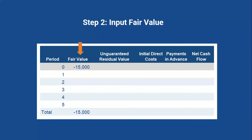Now we need to start plugging in those different facts. The fair value of the asset at the beginning of the lease is $15,000, so we're going to plug that $15,000 into period zero because this is right at the start of the lease, and it's going to be a negative value. The reason this is a negative value is because we're thinking about this as the lessor — this is a negative cash flow for them because they're essentially losing that value to the lessee. So it's going to be a negative cash flow in that very first period.